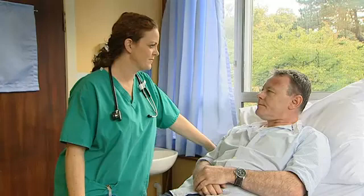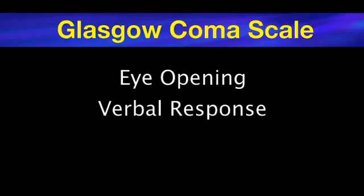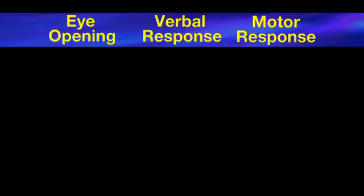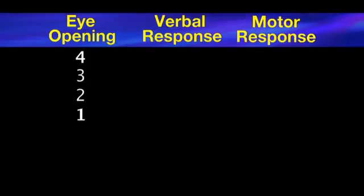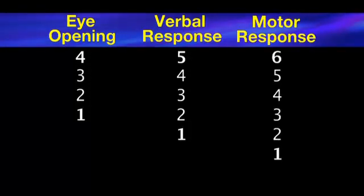Now that you have seen the different techniques used to elicit a response, we shall take the different components of the scale in turn, showing how these are scored. There are three components: eye-opening, verbal response, and motor response. The eye-opening response is scored with a maximum of four and a minimum of one. The verbal response has a maximum of five and a minimum of one. The motor response has a maximum of six and a minimum of one. The minimum score for each component of the GCS is one, to demonstrate that the component has actually been assessed, thereby avoiding a score of zero.